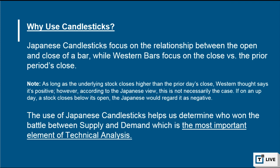We said that we use Japanese candlesticks as opposed to Western bar charts because candlesticks look at the relationship between the open and the close of the same bar. Western bar charts look at the relationship between today's close versus the prior period's close. That's not the right way to look at it, because if a stock were to gap up and then spend the whole day selling off to close at the lows, it might have still closed above yesterday's close, and Western thought says this is positive.